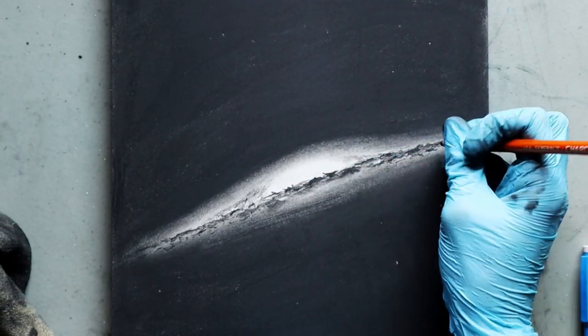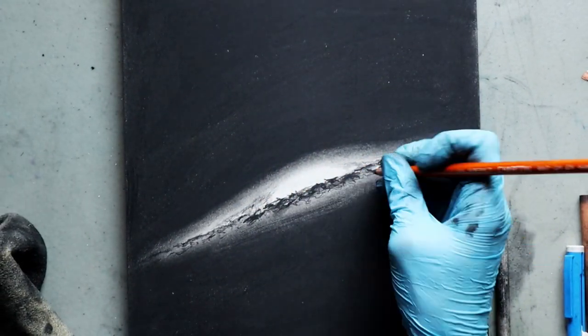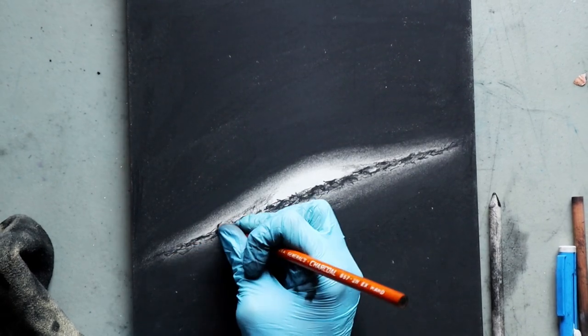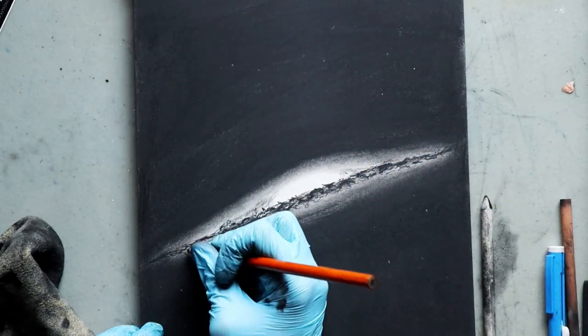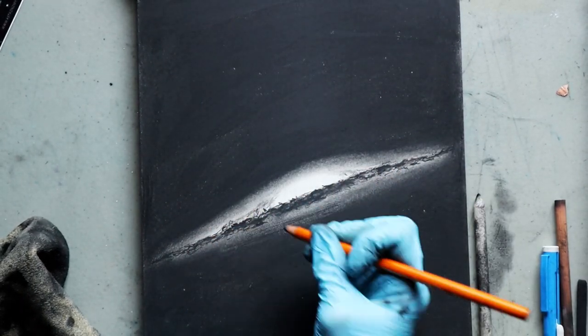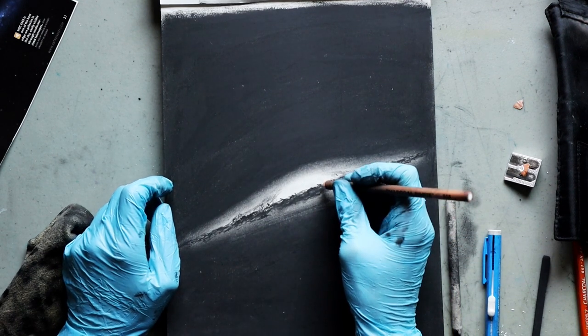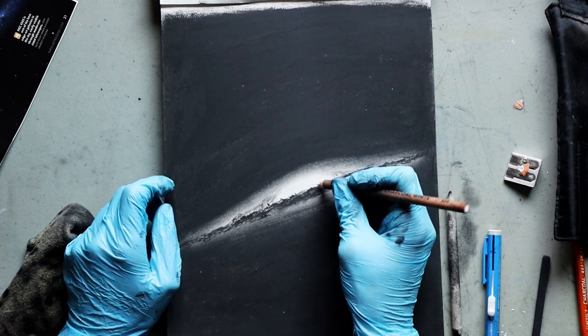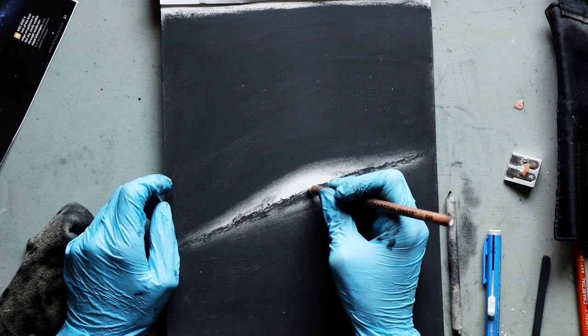Now you may notice me going back and forth between my charcoal pencil and a blending stump. A blending stump is—I'm not exactly sure what it is, I think it's some type of paper—and it's wrapped up and it helps you blend out the charcoal a lot more easily instead of using your fingers.